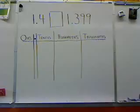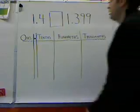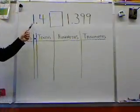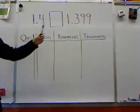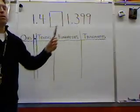What we're doing here today is we are taking an opportunity to look at decimals and to compare decimals to see which in fact is the larger number. When we're looking at the decimals that we have here on the board, we can see that we have 1.4 tenths versus 1.399 thousandths.